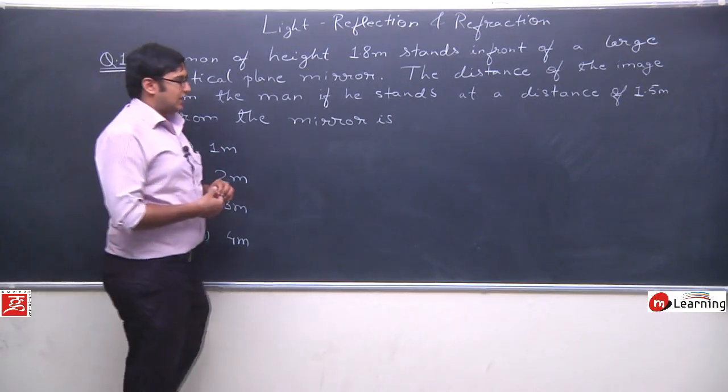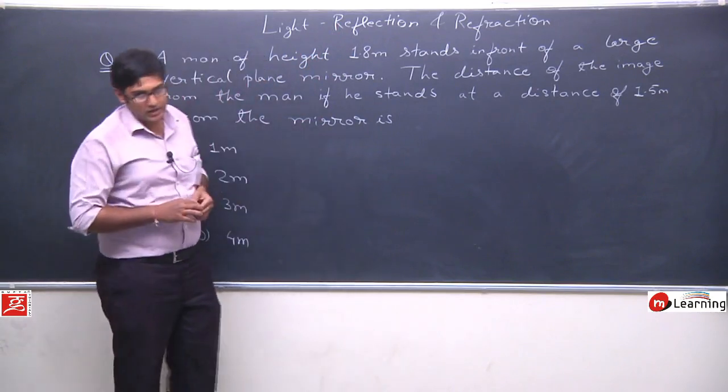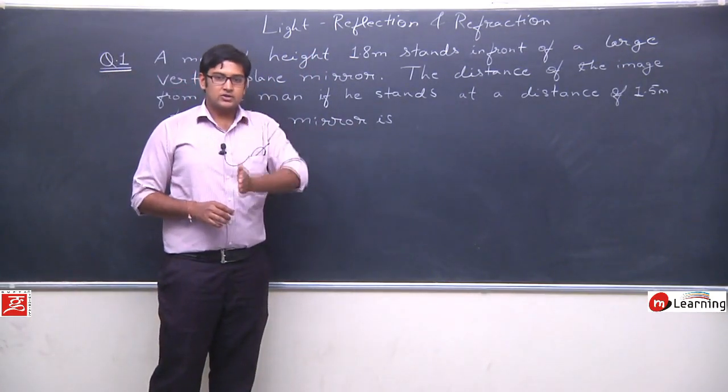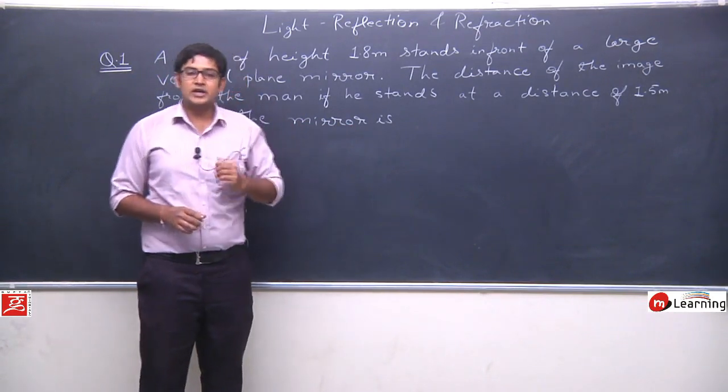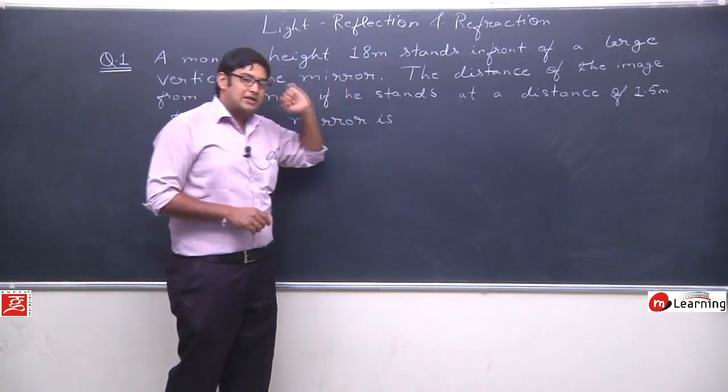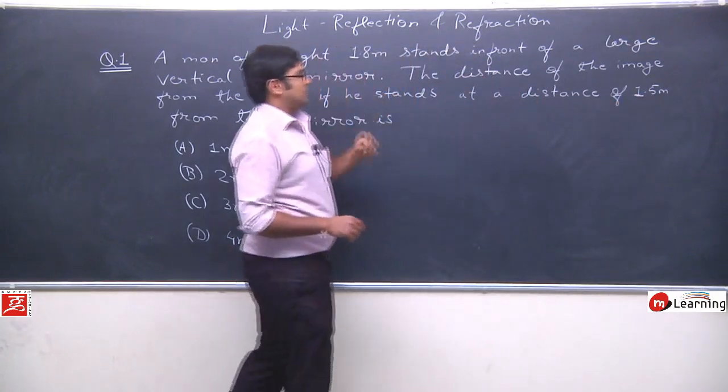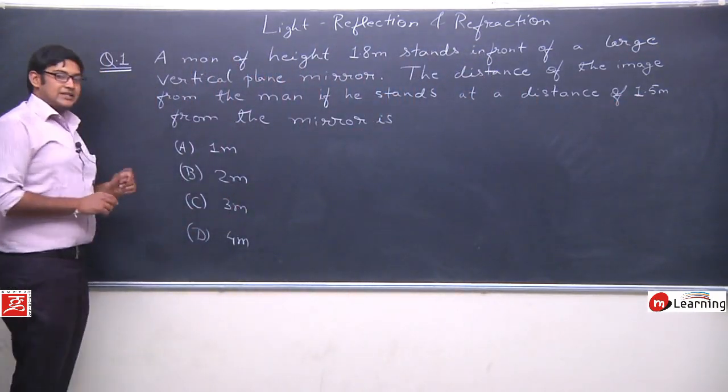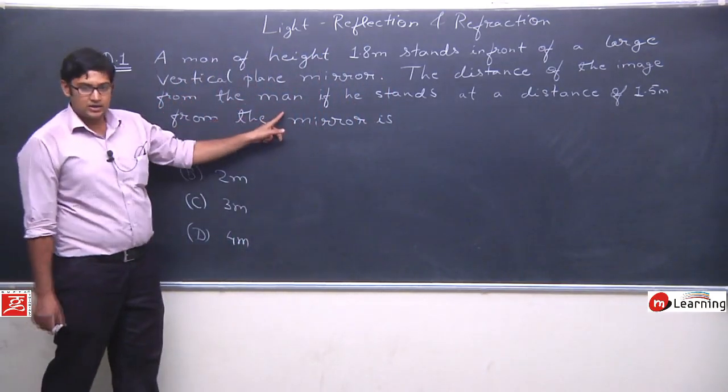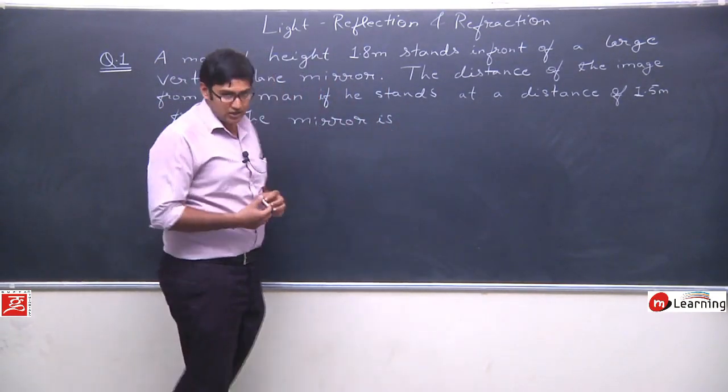A man of height 1.8 meter stands in front of a large vertical plane mirror. The distance of the image from the man if he stands at a distance of 1.5 meters from the mirror is: A option 1.1 meter, B option 2 meter, C option 3 meter and D option 4 meter. He is asking to find the distance of the image from the man, the distance between the man and the image.